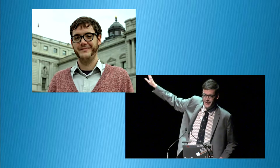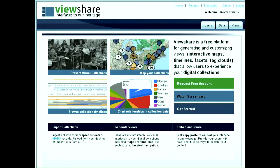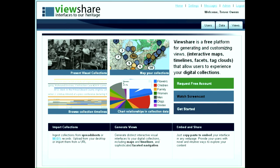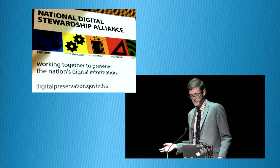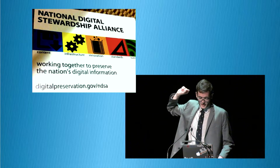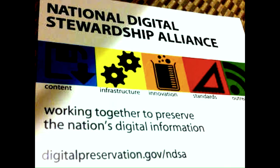I worked there for four years and then moved to the Library of Congress, where I worked on a range of things over four years. While there, I worked on ViewShare — a service that lets people from libraries, archives, and museums around the world upload collection data and create visual interfaces to them. I also helped establish the National Digital Stewardship Alliance, a network of organizations focused on long-term access to digital information, co-chairing the infrastructure working group.